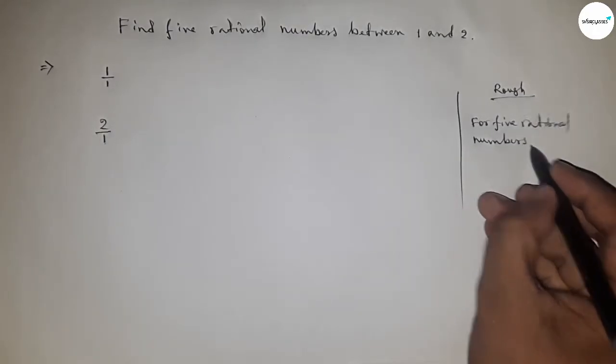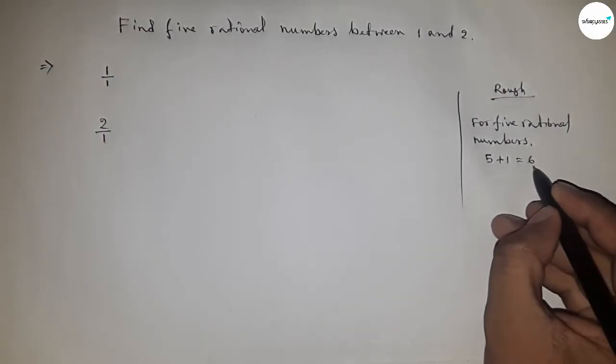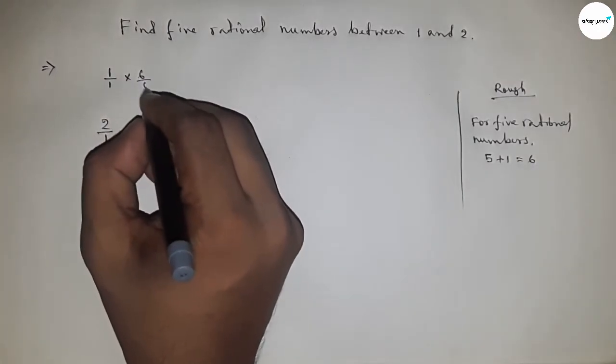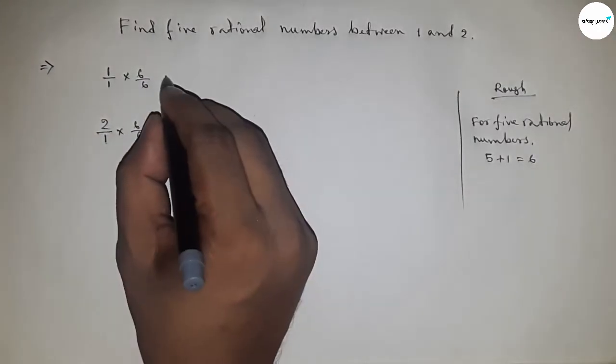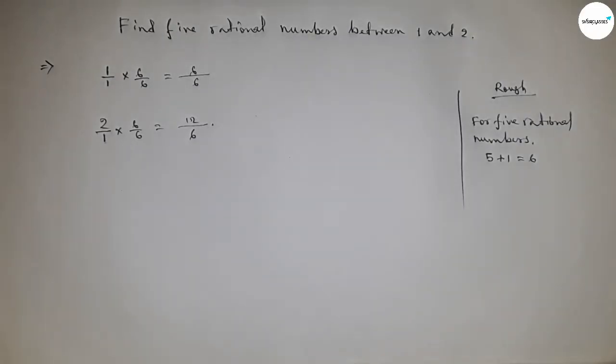multiply both rational numbers by 5 plus 1 equal to 6. So we have to multiply this by 6 upon 6 and here 6 upon 6. So this is 6 by 6 and this is 12 by